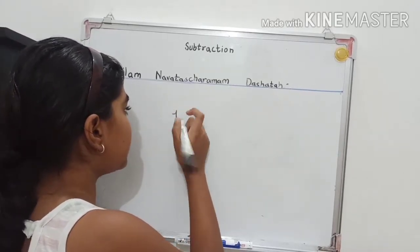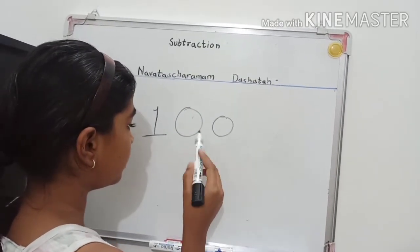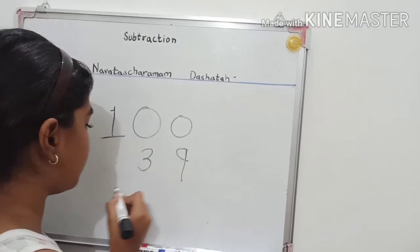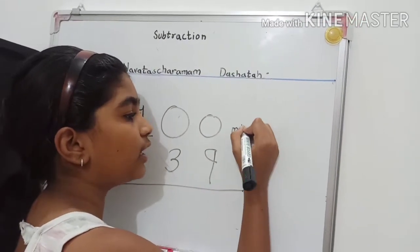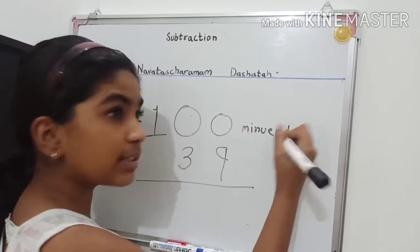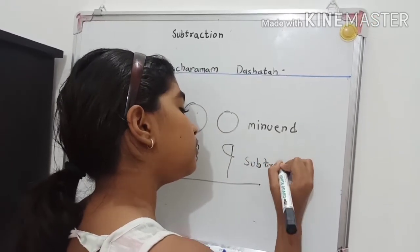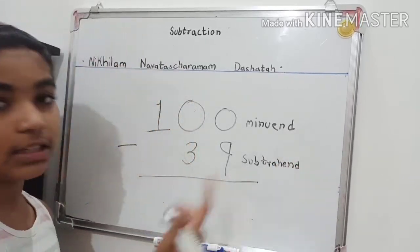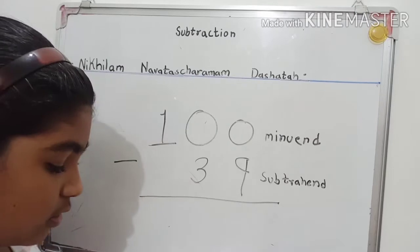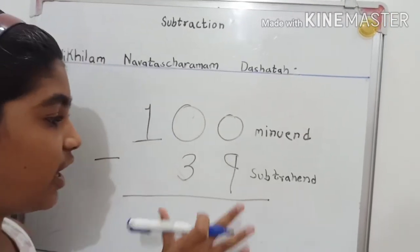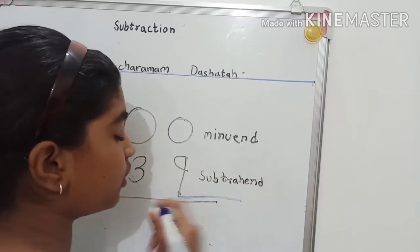Let's take the example of 100 minus 39. This is the minuend and this is the subtraction. Now we are going to identify the 'all' numbers and the 'last' number in 39. The last digit is the rightmost digit, and all the digits to its left are the 'all' numbers.